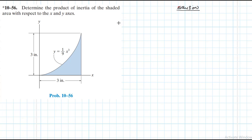The main use of product of inertia of an area is for determining the maximum and the minimum moments of inertia of an area. These are also called the principal moments of inertia of an area.